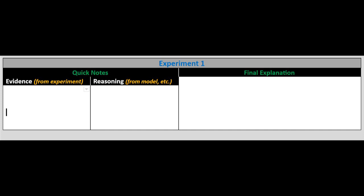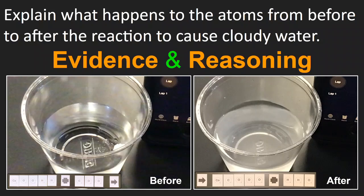One major goal of this lab is to construct an explanation. Experiment number 1 of this reactions lab ends by writing your explanation in the final explanation box on the reactions lab doc — write at least several sentences using everything you've learned. Construct an explanation for what happens to the atoms from before the reaction to after the reaction to cause cloudy water. Use both evidence from the experiment and reasoning from the model in your explanation.